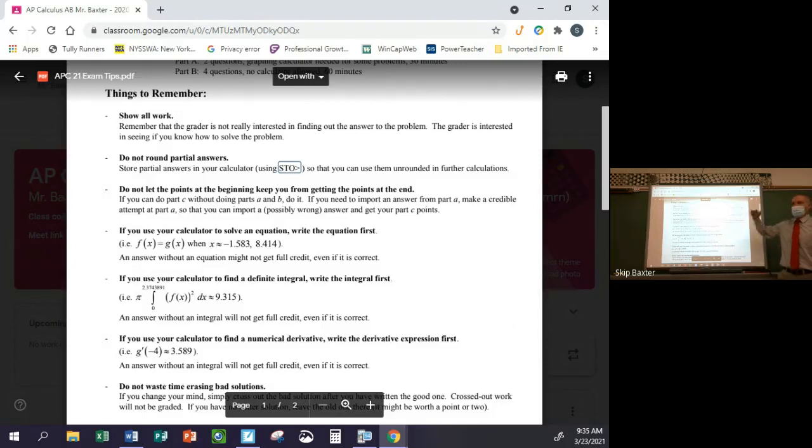If you can do part C of a free response without doing parts A and B, then do that. Don't skip the whole thing just because you can't figure out how to do part A. And then it says if you need to import an answer from part A, then just make a credible attempt at part A so that you can import that wrong answer into part C and get your points. So that's an important thing to remember also.